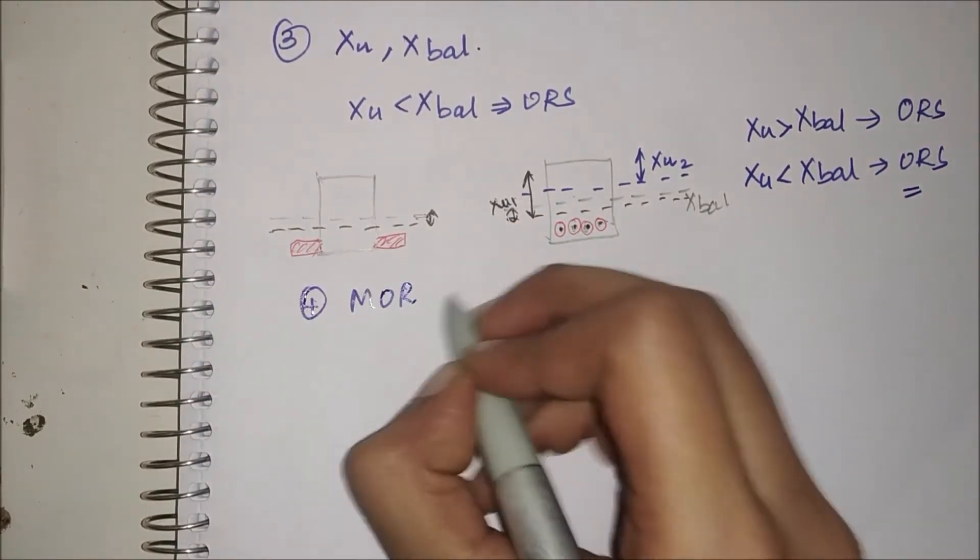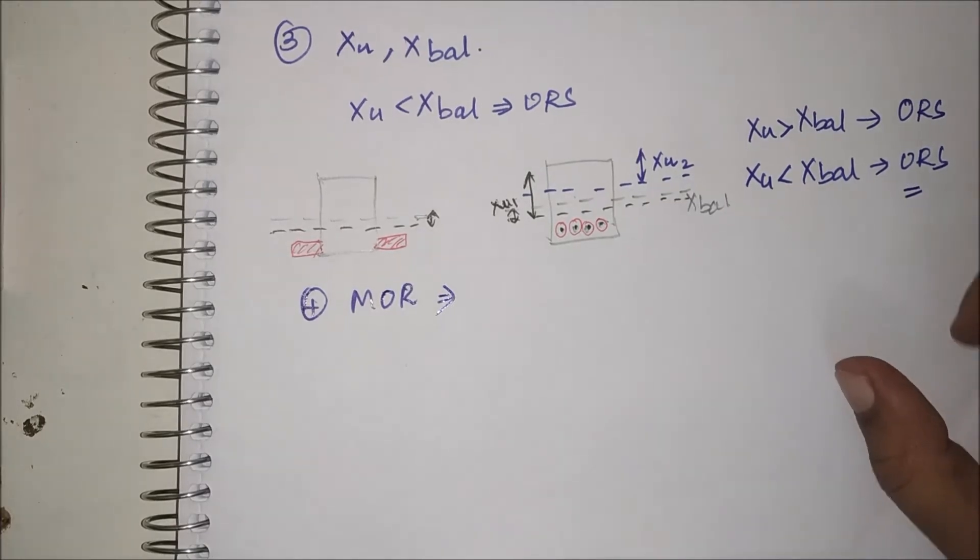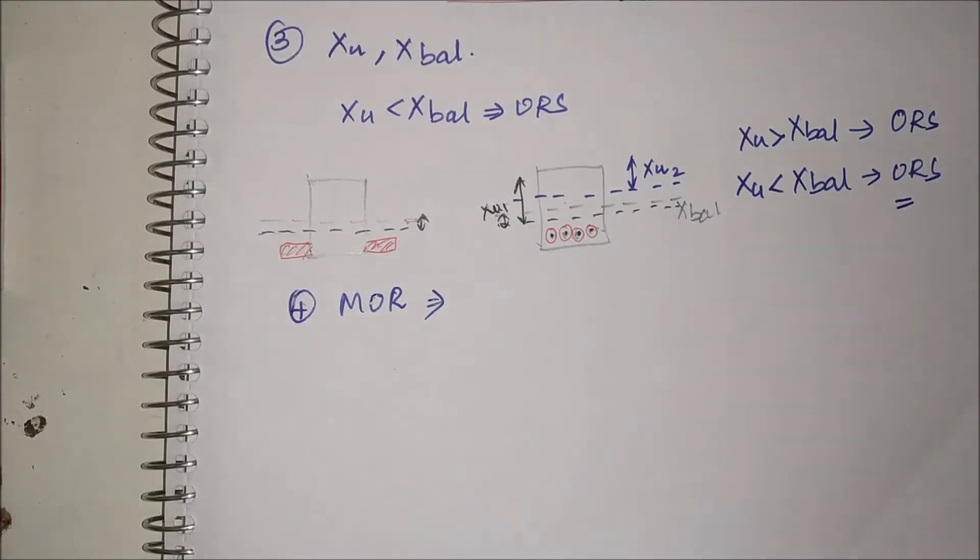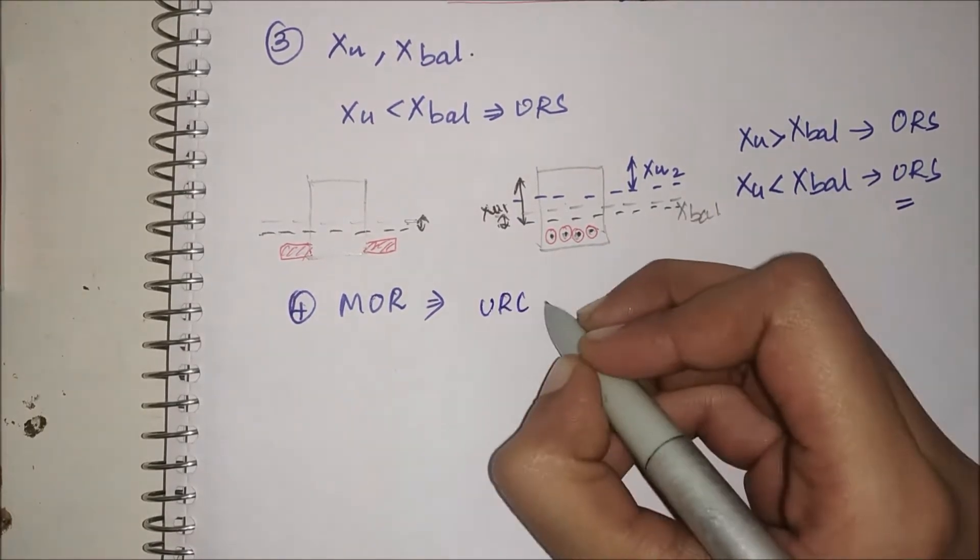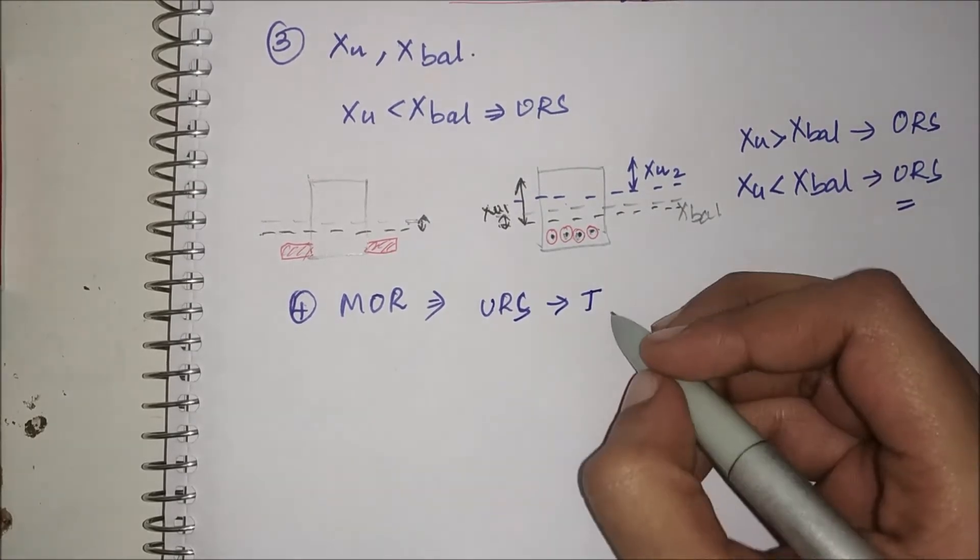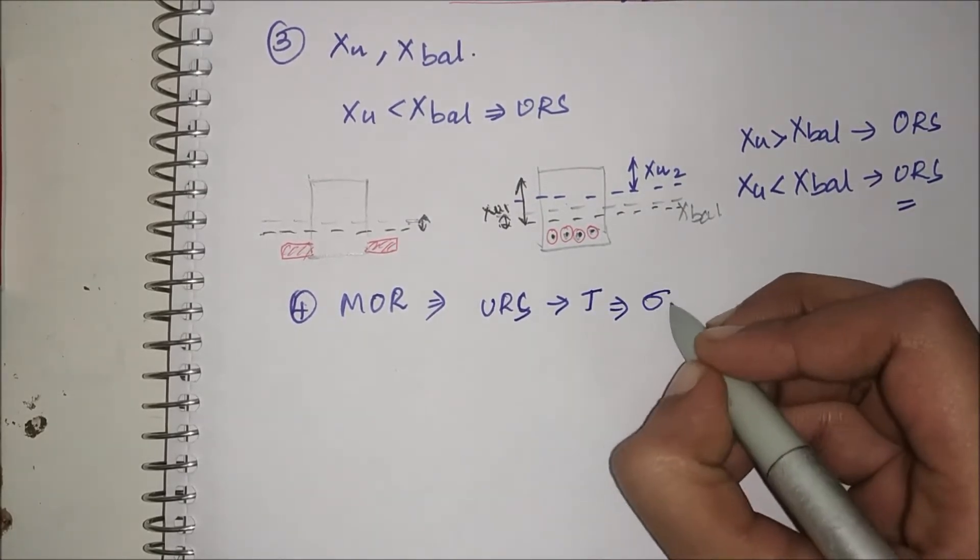So moment of resistance, you have to find whether it is an under reinforced or over reinforced section, or if it is a balanced section. If it is an under reinforced section, steel fails first.